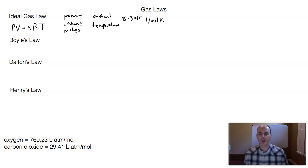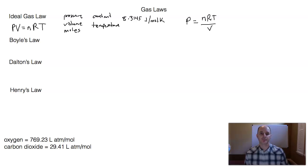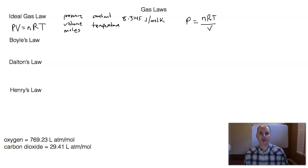If you know the volume and the moles and the temperature of a gas, then you could calculate pressure because you can rearrange the ideal gas law. So if we wanted to solve for pressure, the ideal gas law would be pressure is equal to NRT divided by V. What's nice about the ideal gas law is you can use it to solve for a number of variables. If you knew the pressure and the moles and the temperature but didn't know the volume, you could solve for volume. The ideal gas law comes from several other laws — Boyle's law, Avogadro's law, and Charles' law are all combined together to form the ideal gas law.